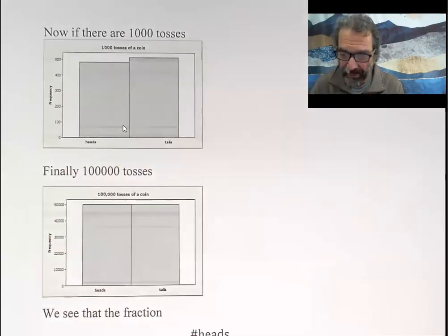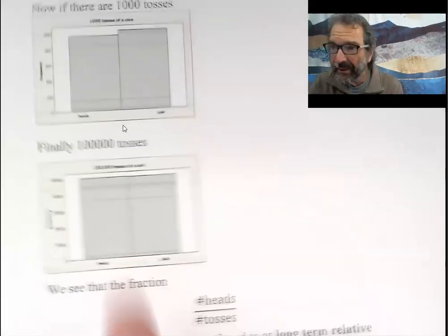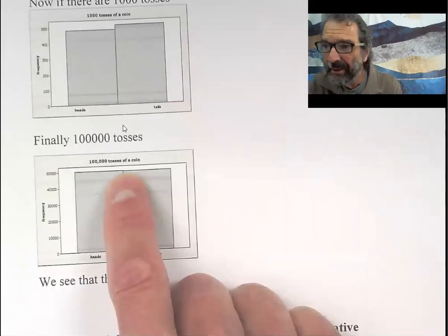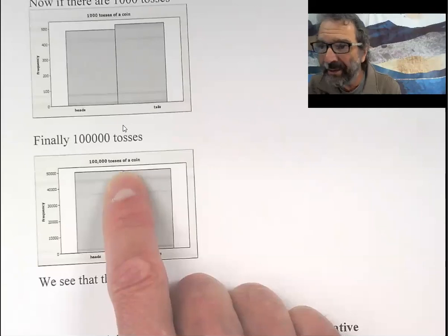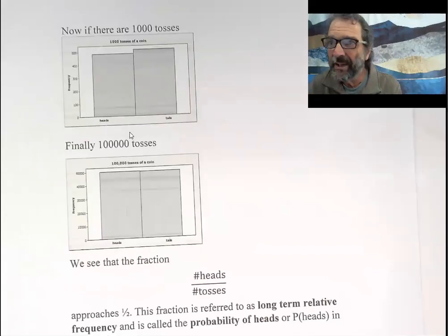And then if you go up to 100,000, you can barely see the difference. The difference in actual numbers of heads is probably something like 50 or 60 or something, but now we're dealing with a hundred thousand tosses. So it just seems like they're exactly the same size.